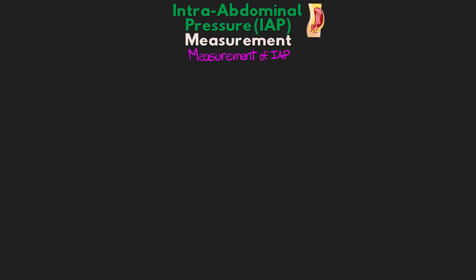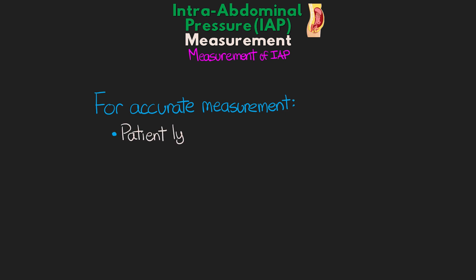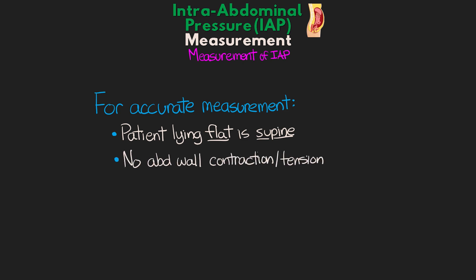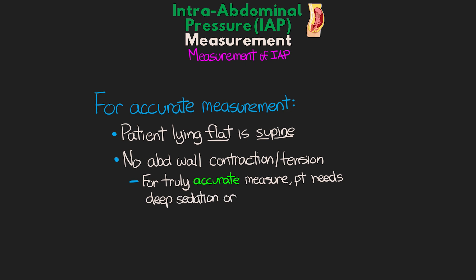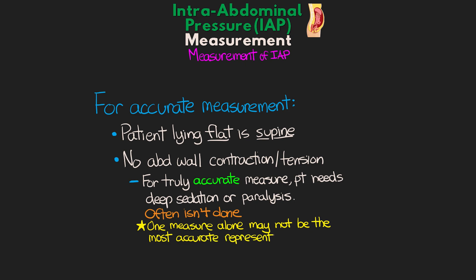Before we talk about how we get this measurement, it is important to know that in order to have a truly accurate measure, there are a few things that need to exist. The patient should be lying flat in the supine position and there should be no abdominal wall contraction or tension. For a truly accurate measure, the patient would actually need to be either deeply sedated or paralyzed. This often isn't actually done, so it is important to understand that any one measure of intra-abdominal pressure itself may not be the most accurate, and this is really where the importance of trending measurements comes into play.